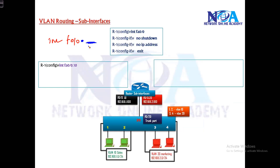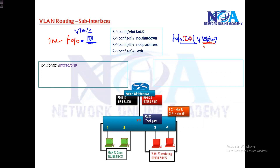It is recommended to use the same number as the VLAN number to avoid confusion, but any number can be used. Make sure that number is unique — I cannot use F0/0.10 for VLAN 20 as well; that is not correct. If I'm using one sub-interface number, I should not create another sub-interface with the same number on the same router, or it will overwrite. So I'll be using 20 for VLAN 20.